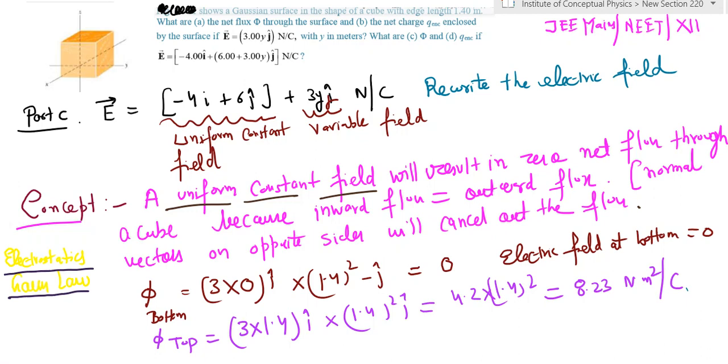Good morning and welcome to video 3 on this Gauss numerical. So if you see part C, the electric field has been changed to minus 4i plus 6j plus 3yj. In the previous part, the electric field was 3yj, a non-uniform electric field. But now if you see carefully, the field has become in two parts.